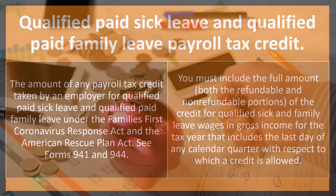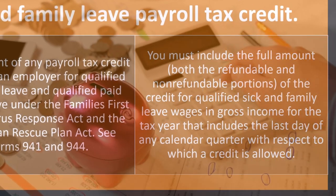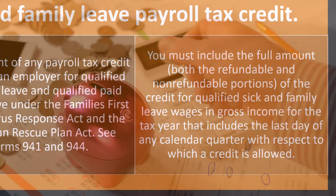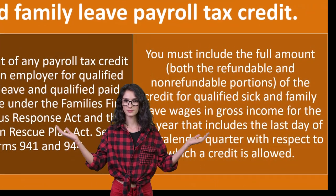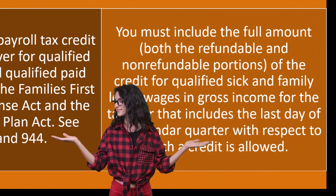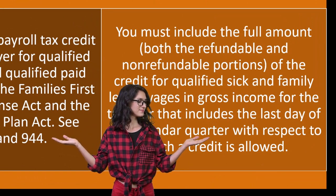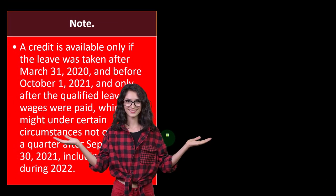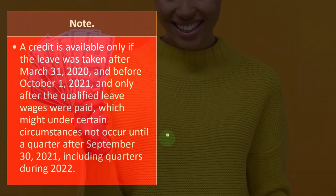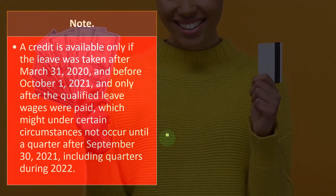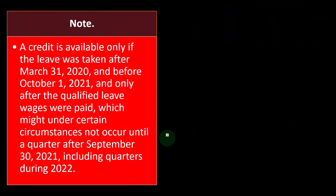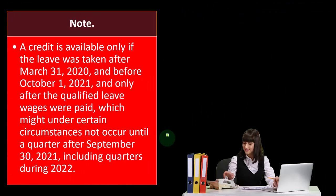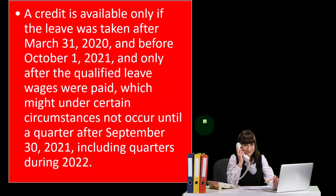If you want to dive into more detail, you must include the full amount — both the refundable and non-refundable portions of the credit for qualified sick and family leave wages — in gross income for the tax year that includes the last day of any calendar quarter with respect to which a credit is allowed. Note: a credit is available only if the leave was taken after March 31st, 2020 and before October 1st, 2021, and only after the qualified leave wages were paid, which might, under certain circumstances, not occur until a quarter after September 30th, 2021, including quarters during 2022.